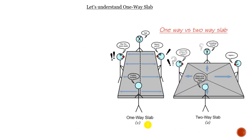Let's just understand the one-way slab. I have these four guys and they're trying to lift this panel — the closer you are, the more load you contribute into lifting. These two are going to take much more than the farther-apart guys. The load here is flowing in just one direction. When we have a panel with dimensions that are almost proportional, then everyone contributes into lifting — meaning the load is transferred in two directions, making a two-way slab. That makes a one-way slab — this is a very simple analogy.